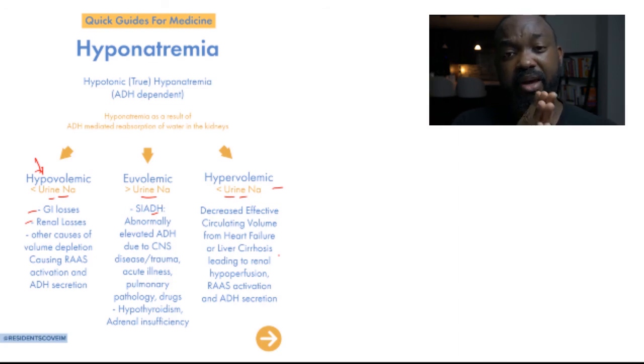Where you have ADH primarily from a disease like pulmonary pathology or CNS pathology, or drugs or critically ill patients with transient SIADH, you have ADH being produced abnormally, and that's causing the hyponatremia. You use your urine sodium because the renin-angiotensin system.